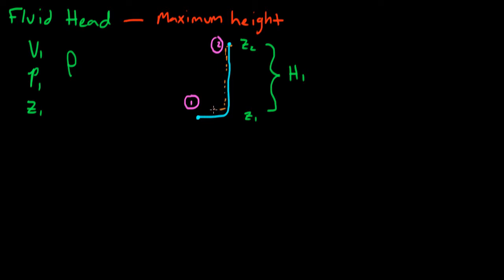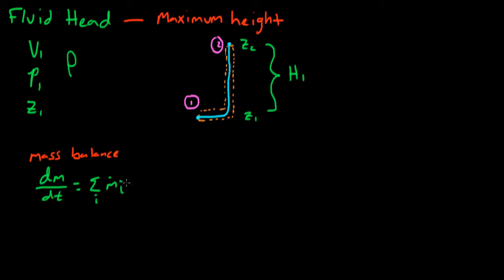The system boundary is chosen to be an infinitesimally small control volume around the streamline. We write the mass balance for this steady flow, and see that the mass flow remains constant — that is, ṁ₁ is equal to ṁ₂.